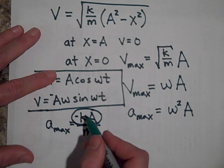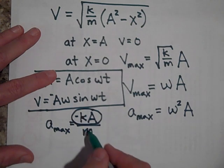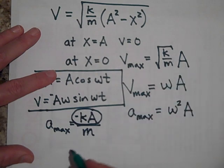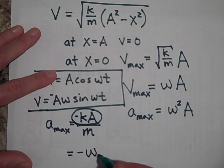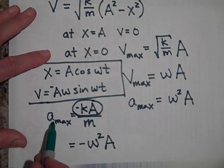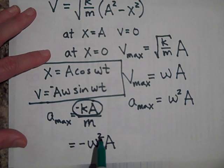Now, if you notice something here, the K over M, that's looking like, yeah, sure enough, K over M is looking like omega squared. Yeah, so you get your maximum acceleration when it's omega squared A.